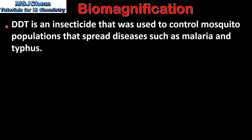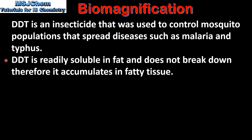DDT is an insecticide that was used to control mosquito populations that spread diseases such as malaria and typhus. DDT is readily soluble in fat and does not break down, therefore it accumulates in fatty tissue.